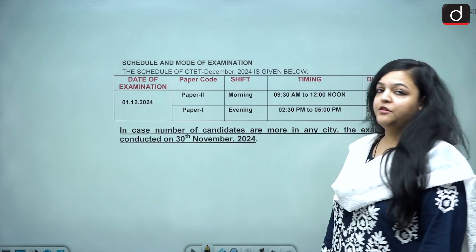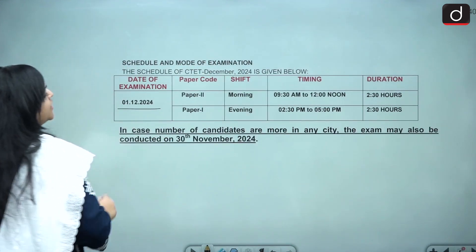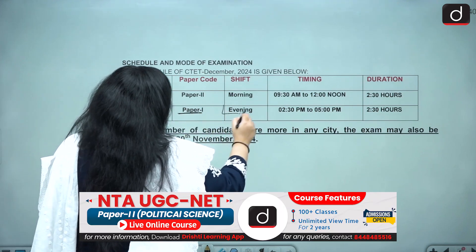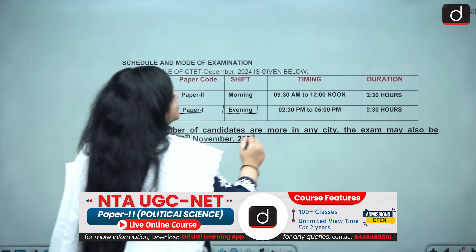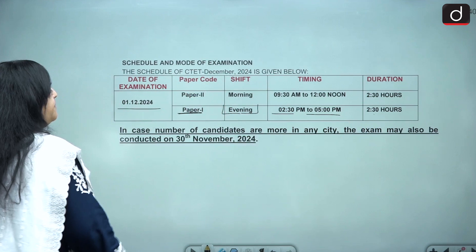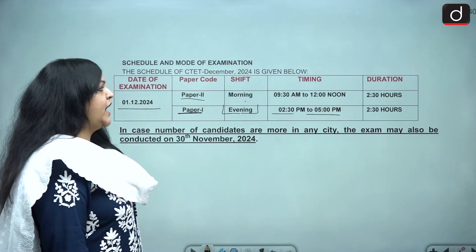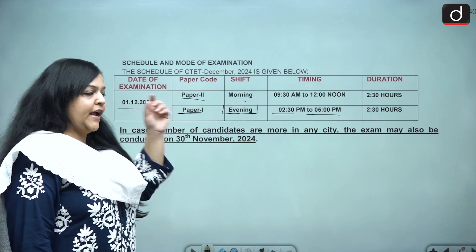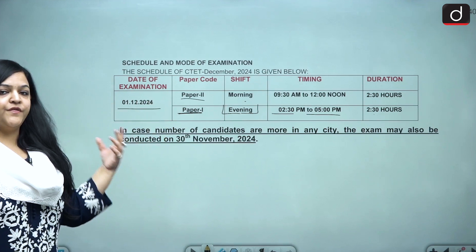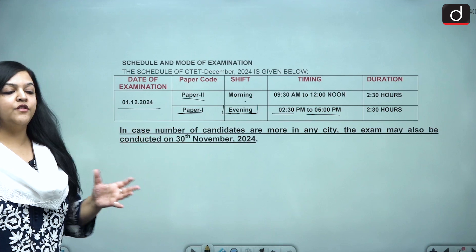This is the schedule and mode of examination. The date of examination is 1st December 2024. Paper 1 is in the evening shift from 2:30 PM to 5 PM, and you will be given two and a half hours. Paper 2 is in the morning from 9:30 AM to 12 noon, and you will again be given two and a half hours. Please remember, if the number of students are more, the examination can also be conducted on 30th November.